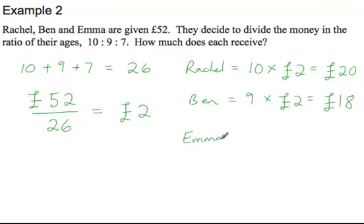Now Emma, she's the youngest, so she gets 7 parts. 7 parts times 2 pounds per part will give her 14 pounds.